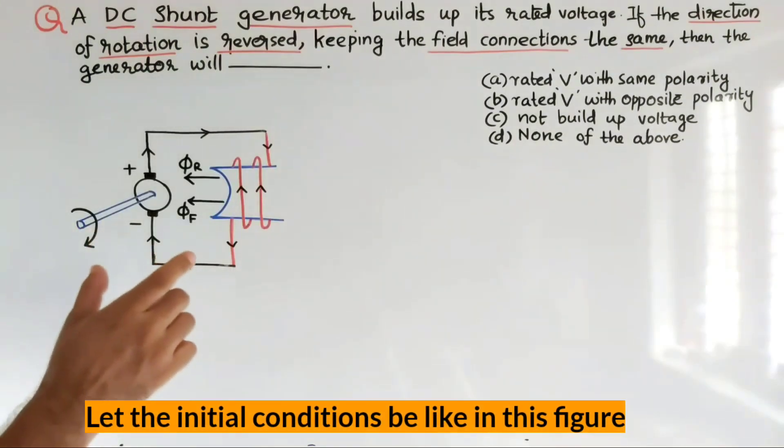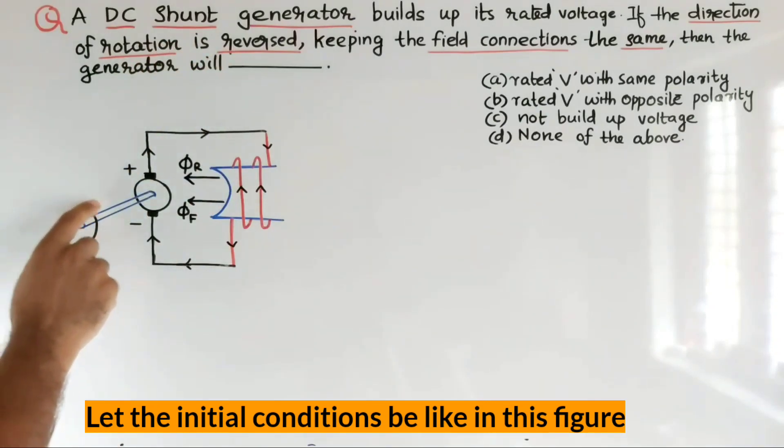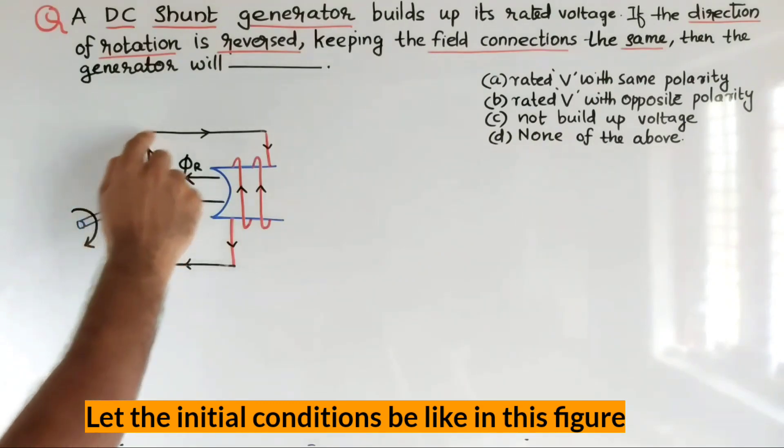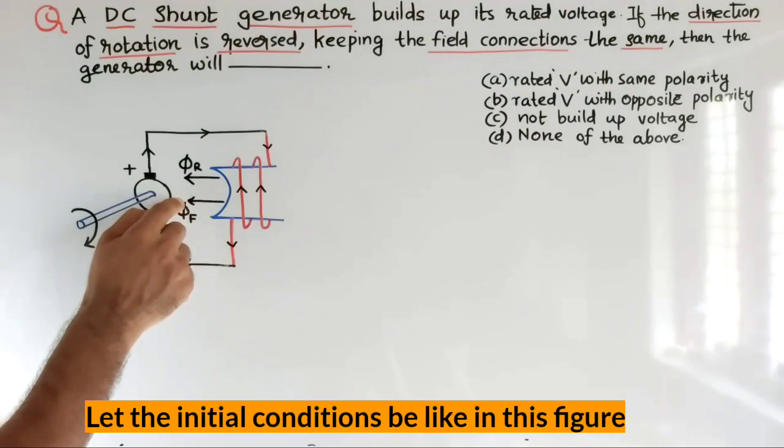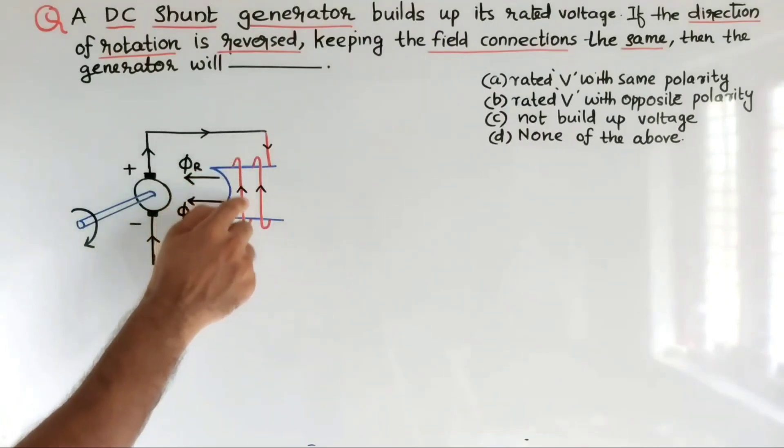Here, it is a normal case of a DC shunt generator. The prime mover is rotating in the clockwise direction. The polarity of induced EMF may be such that the positive is on the upper side and negative is on the lower side, and the current flow is like this. This is the direction of residual flux and this is the direction of the main field flux. It is towards the left side because of the current flow direction.